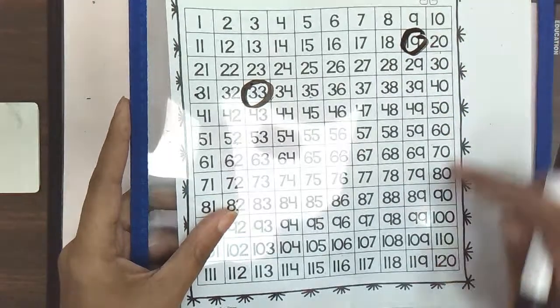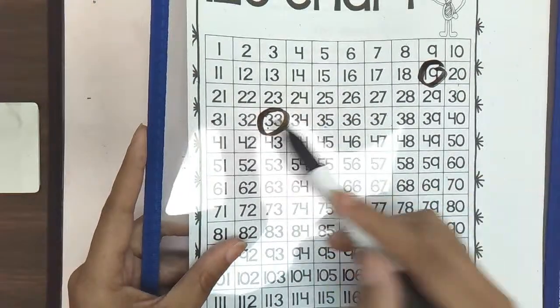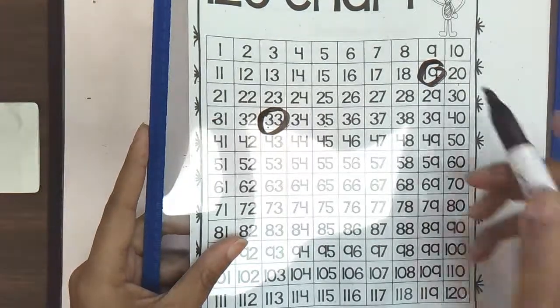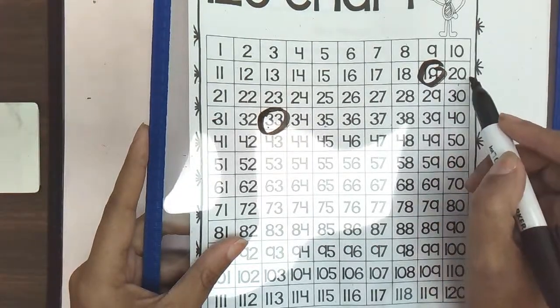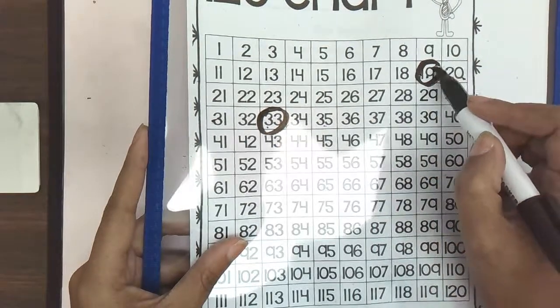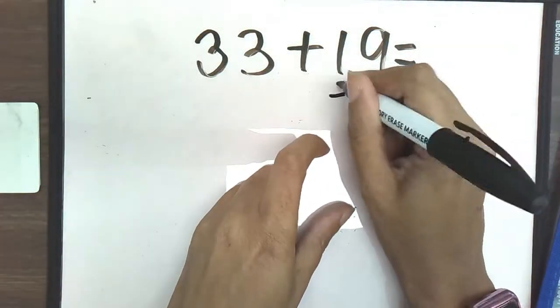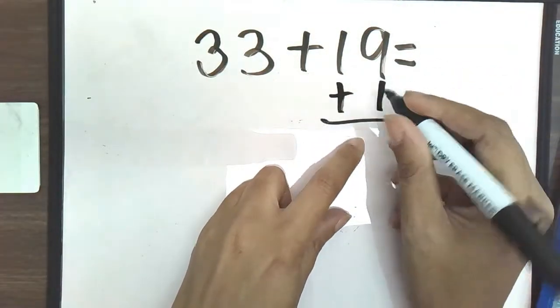And remember, our 10s are here on the column. So we are going to see which one of these numbers, 19 or 33, is going to be closest to a 10. And we can see that 19 is going to be closest to our 10. So what are we adding to 19 to get to our 10? We're adding 1.